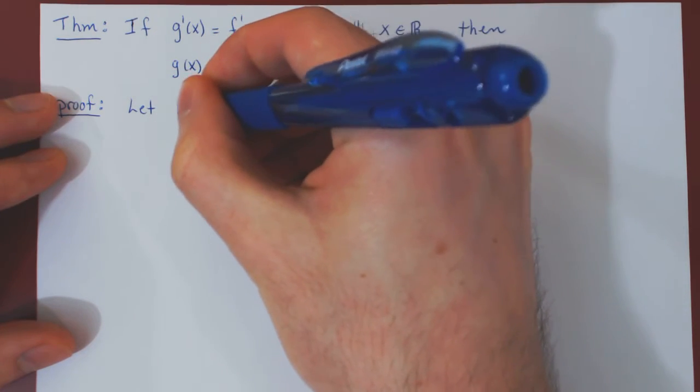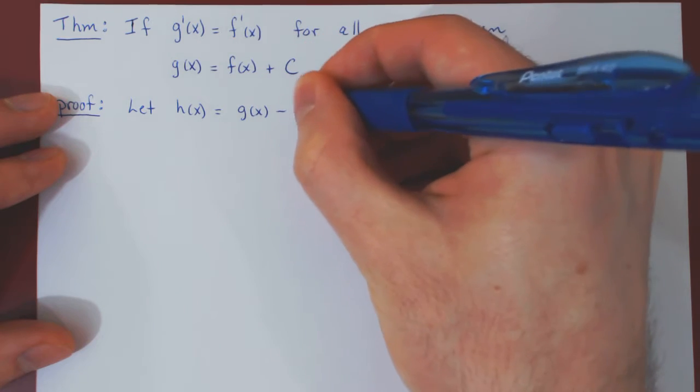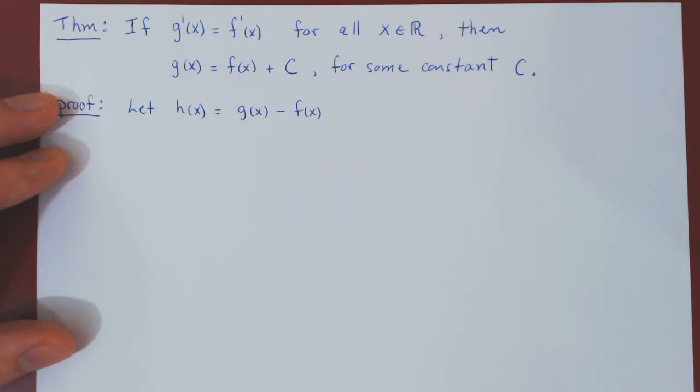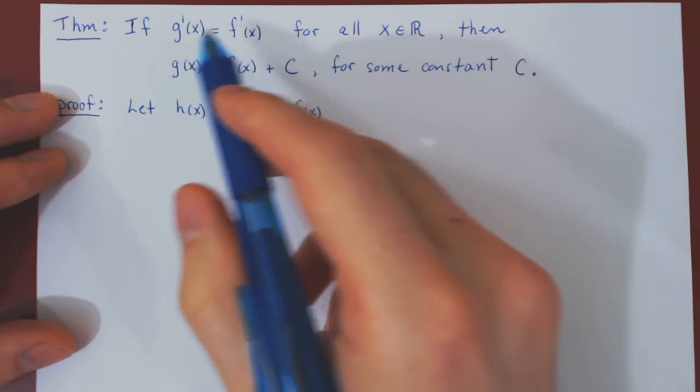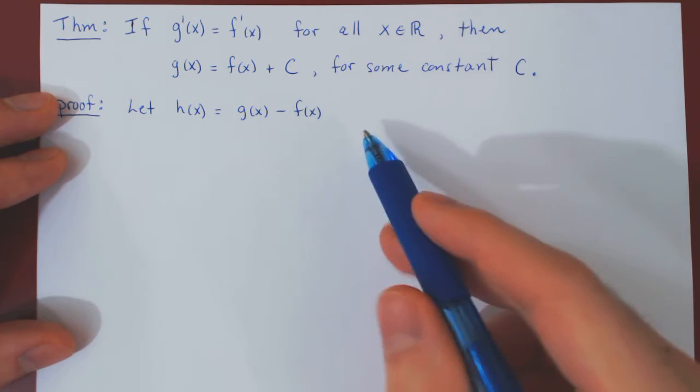So let h of x be quite simply g of x minus f of x. Well, as both g and f are assumed to be differentiable, the difference is also differentiable. So differentiate both sides.